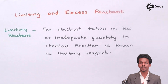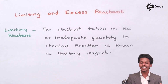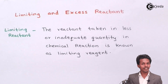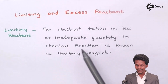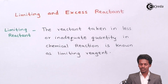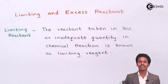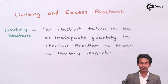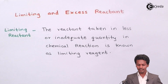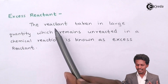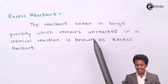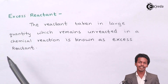We have to understand these two concepts. The first is limiting reagent: the reagent taken in less or inadequate quantity in a chemical reaction is known as the limiting reagent. The second is excess reagent: the reagent taken in large quantity which remains unreacted in a chemical reaction is known as the excess reagent.